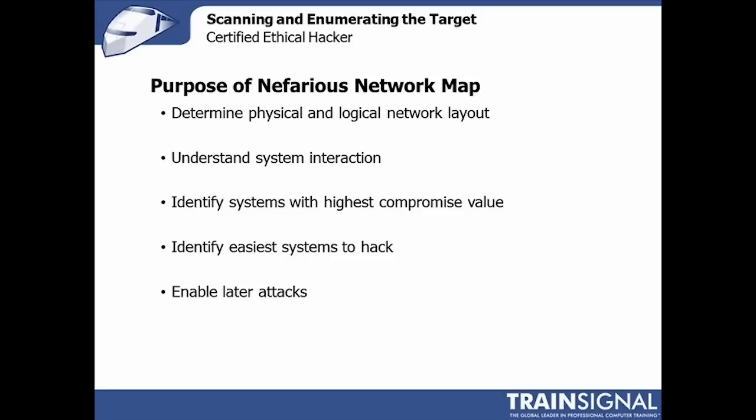Following the patterns of typical network and system use when attacking — the only way to do that is to build out a nefarious network map so you understand it. When enumerating systems, you're identifying systems that are vulnerable — for example, older operating systems, unpatched systems, or systems with extra services and features enabled. But you're also potentially identifying systems that may be super hard to hack, but if you do, you gain everything.